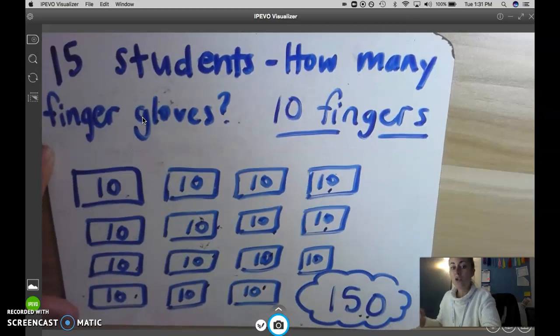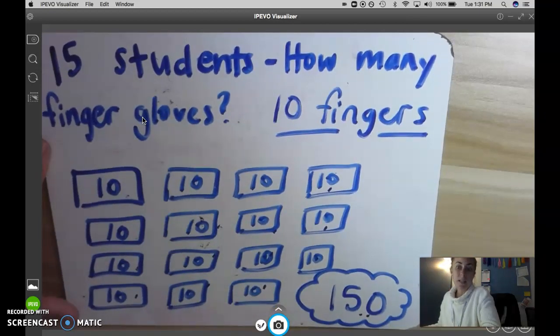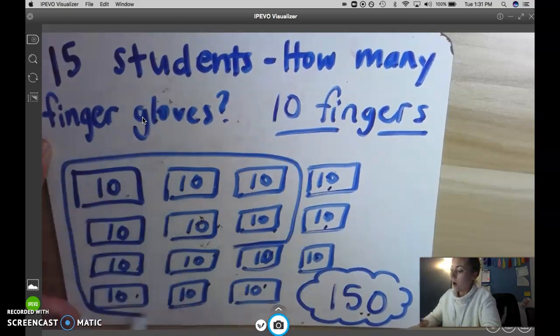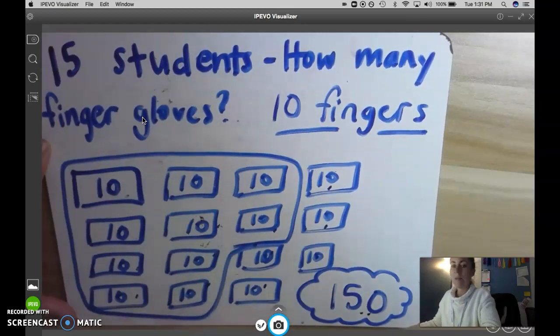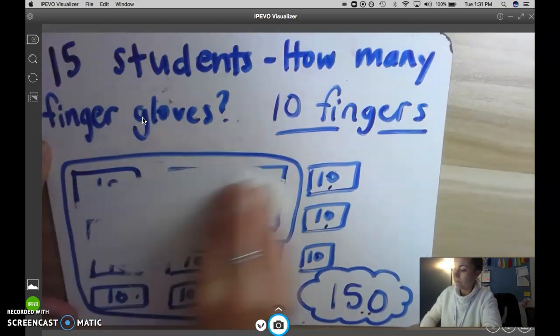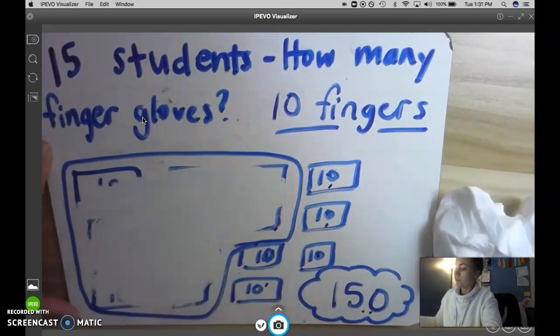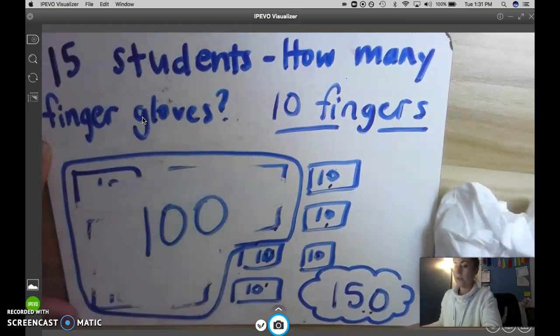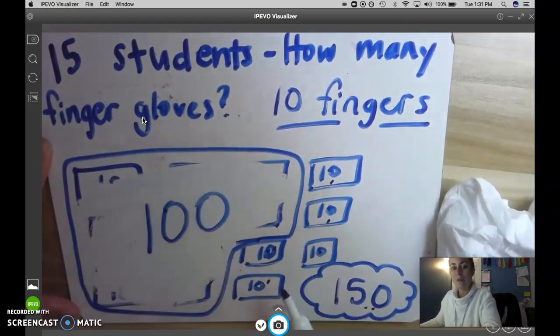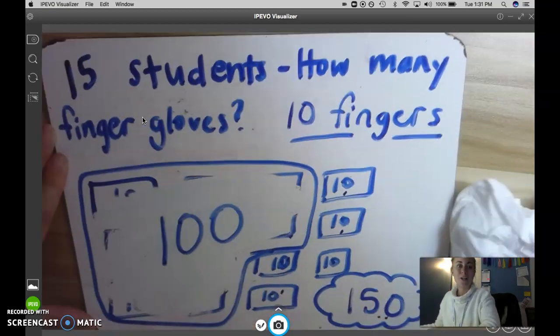I can also circle what I know is 100, which is the same as 10 tens. All of this is the same as 100, just like on our place value disks. And then I can clearly see it's 100 and 5 groups of 10, which makes 150.